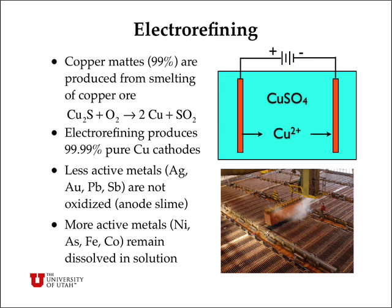More active metals like nickel, arsenic, iron, and cobalt are oxidized into the copper sulfate solution, but they are not as easily reduced at the cathode, and so they actually remain dissolved in the copper sulfate solution. We can get a variety of different metals separated from the copper by this very selective oxidation and reduction process called electrorefining.